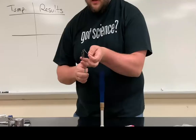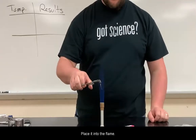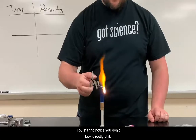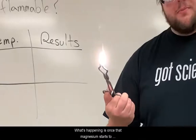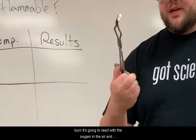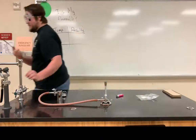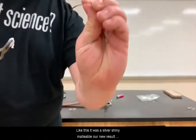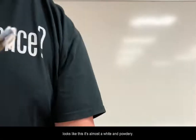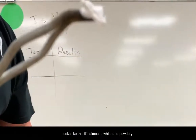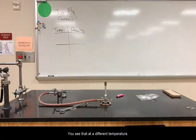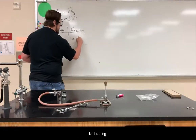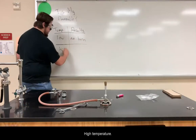Now I've got a hotter flame. I'm going to take my magnesium and place it into the flame. If you start to notice — don't look directly at it — what's happening is once the magnesium starts to burn, it reacts with the oxygen in the air and creates magnesium oxide, which is much different than what we started with. The original magnesium was silver, shiny, and malleable; our new result is almost white and powdery. At a low temperature we had no burning, but at a high temperature we had much different results.